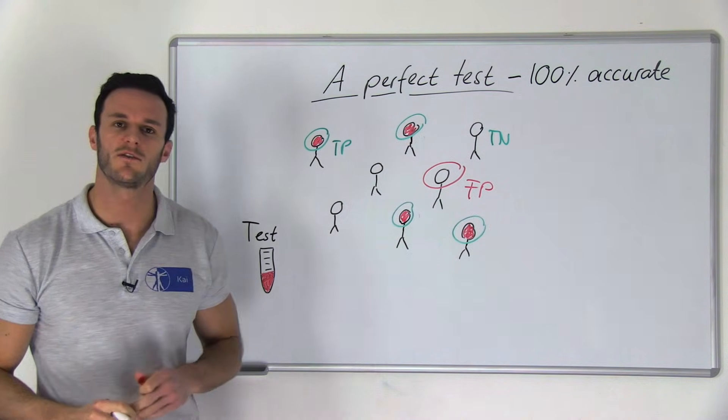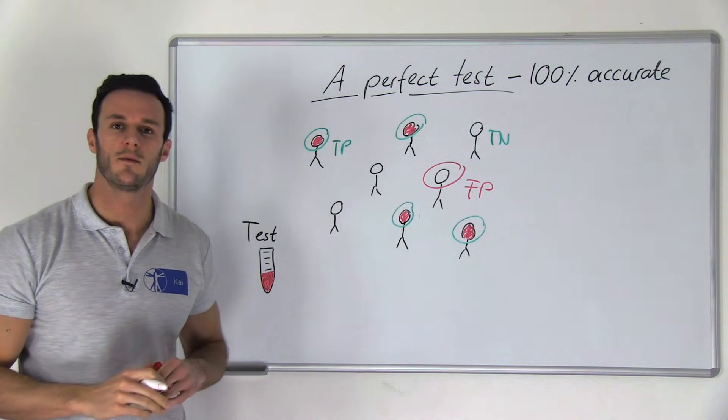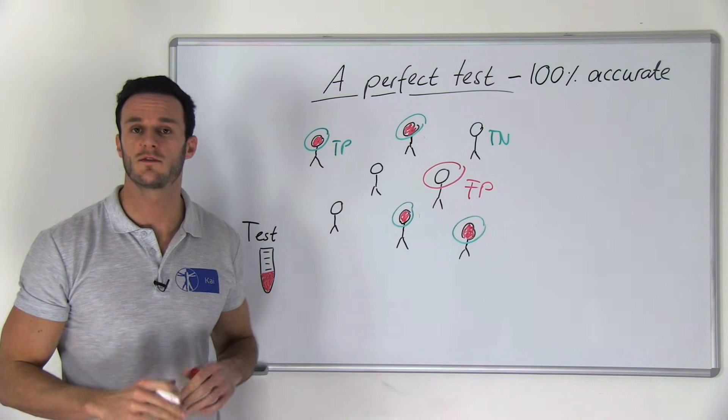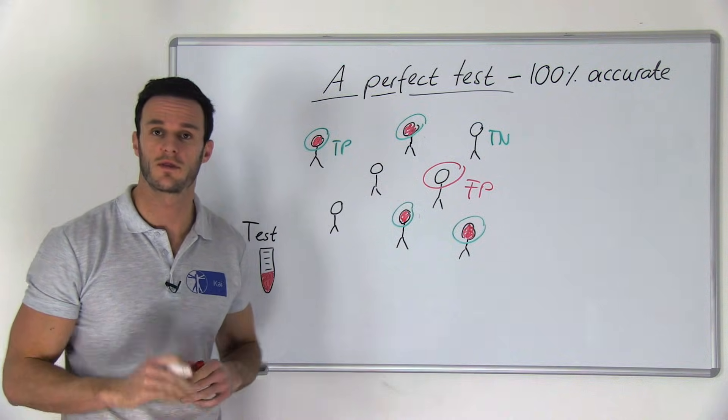And at the same time you will have patients with the disease but your test could not detect them and was negative. They are called false negative, abbreviated with FN.